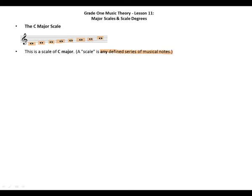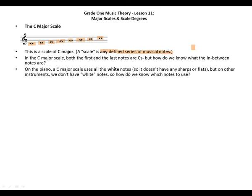In the C major scale, both the first and last notes are C's, but how do we know what the in-between notes are? On the piano, a C major scale uses all the white notes, so it doesn't have any sharps or flats. But on other instruments, we don't have white notes, so how do we know which notes to use?